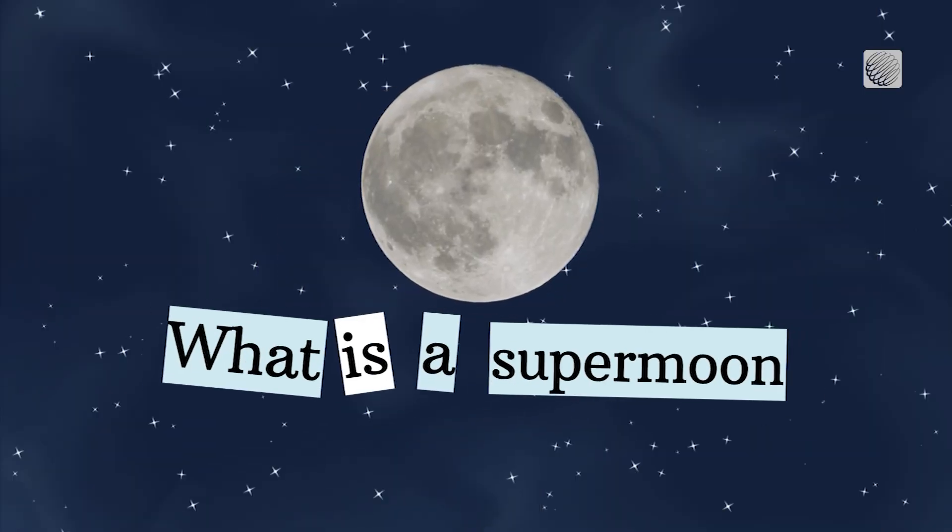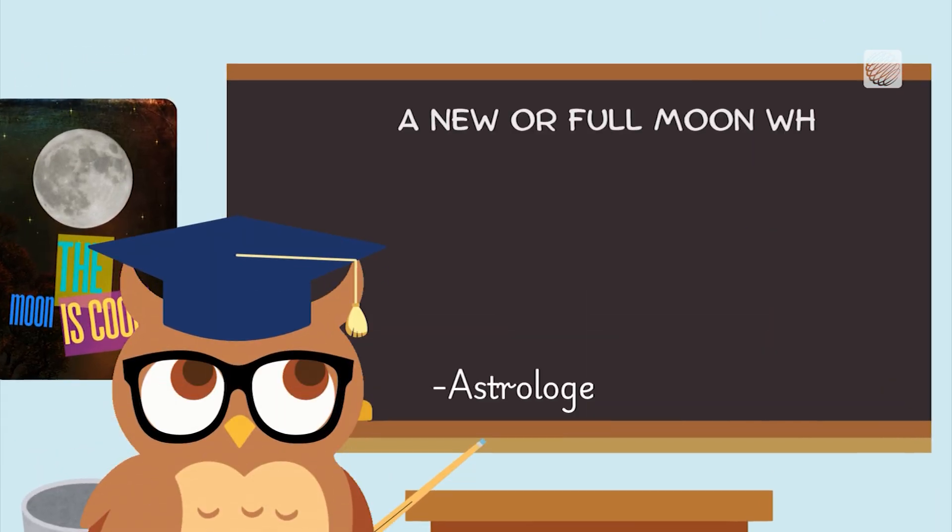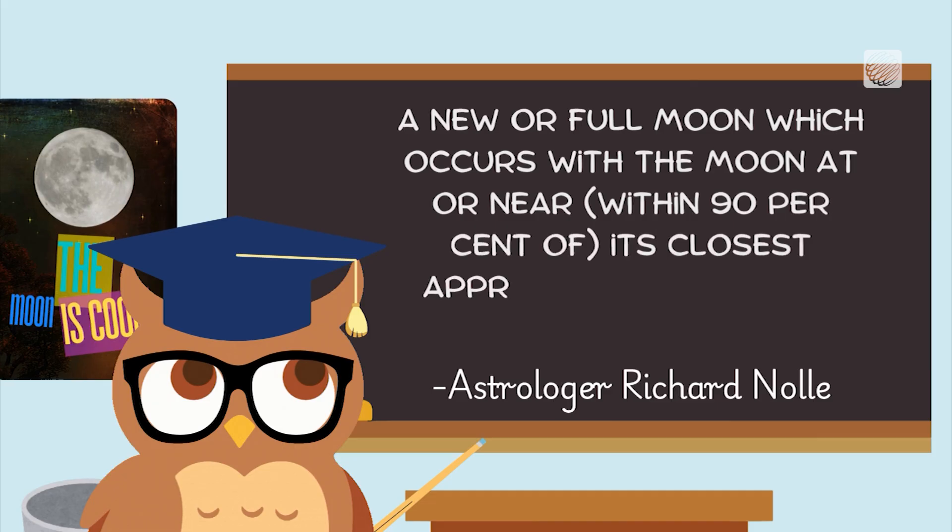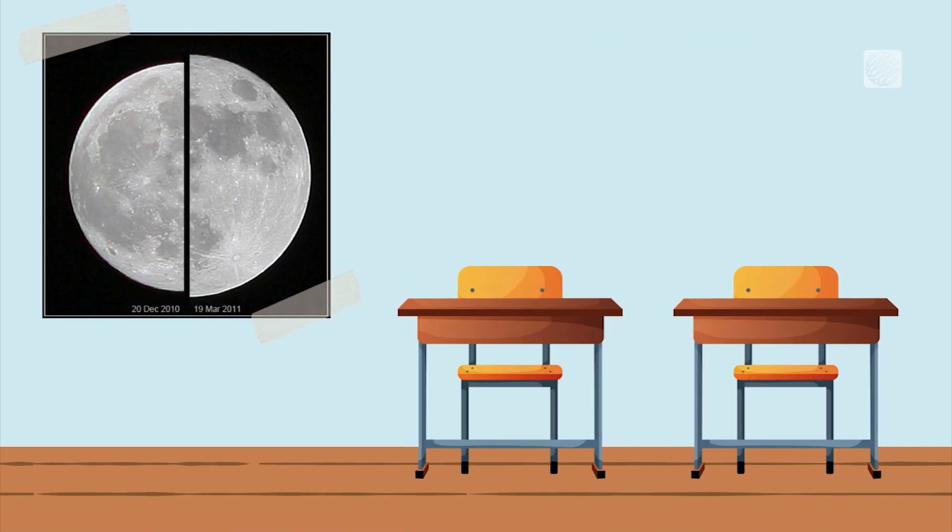So what is a supermoon? A supermoon was defined by astrologer Richard Noll in 1979 as a new or full moon which occurs with the moon within 90% of its closest approach to Earth. Let's break that down.